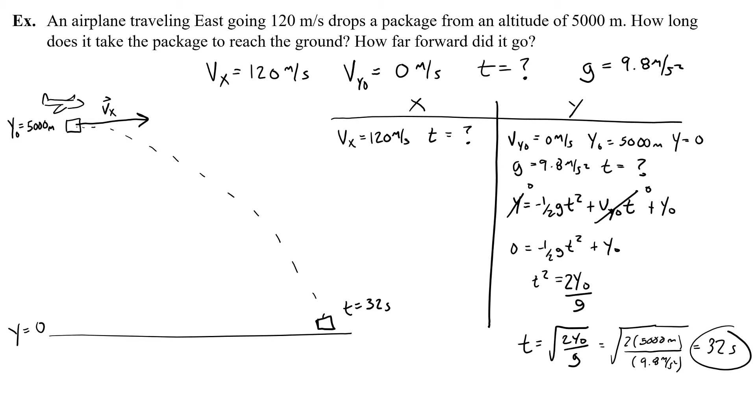Okay, so now let's work on part 2. How far forward did it go? Well, in this case, I can use that 32 seconds in my x side of the chart, because I know that it's going to be in the air going 120 meters a second for 32 seconds. So now, if I say, let's make our initial position x 0, and then write x equals question mark to try and figure out how far forward it goes, so I would write that on my x chart, x equals 0 meters, I want to find x.